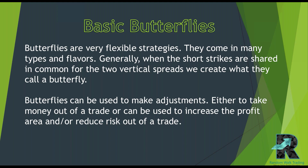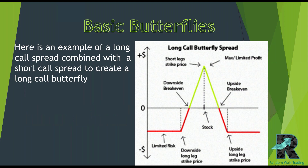Generally, when the short strikes are shared in your verticals that you're either buying or selling, that's what they call a butterfly. Butterflies can also be used to make adjustments — either to take money out of a trade by selling a butterfly, or you can buy a butterfly to increase the profit area or take risk out of the trade. That's kind of the flexibility. They're usually a very small debit if you're going to buy a butterfly.